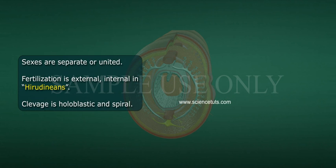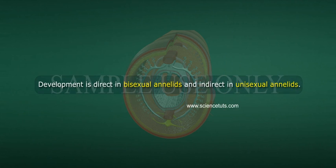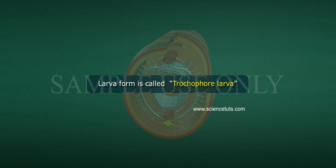Sexes are separate or united. Fertilization is external, or internal in hirudineans. Cleavage is holoblastic and spiral. Development is direct in bisexual annelids and indirect in unisexual annelids. The larval form is called a trochophore larva.